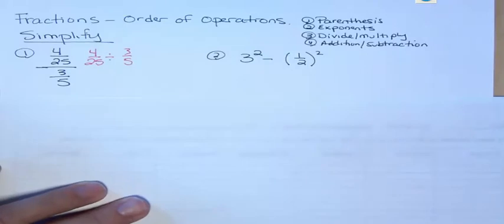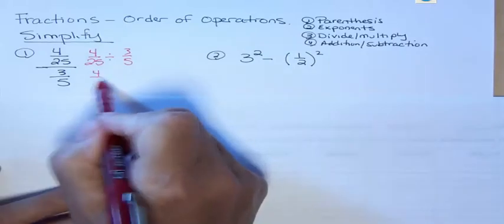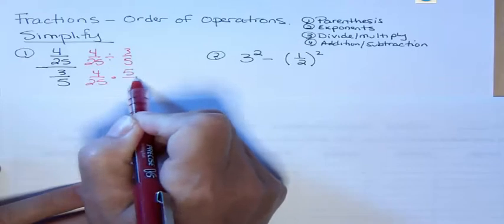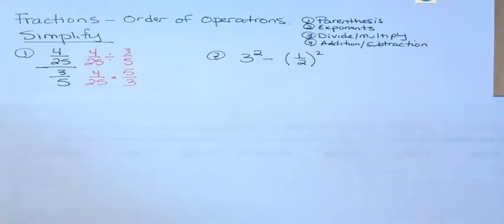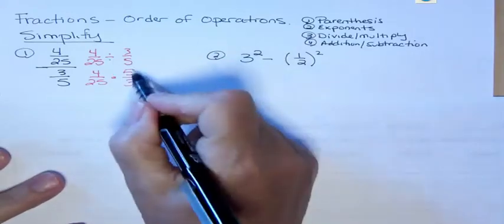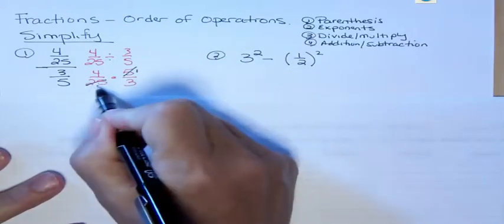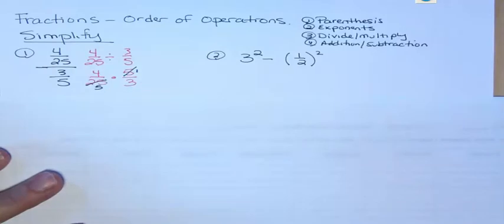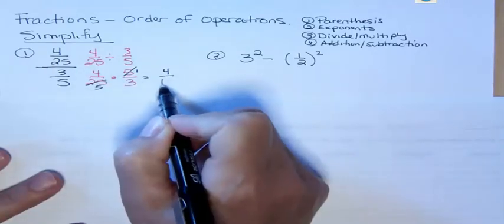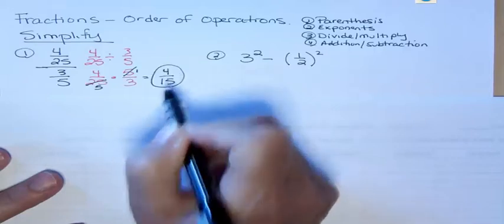So all we would do is keep 4/25 the same, change the division to multiply, and find the reciprocal of the next term, which the reciprocal just means we're going to flip it. And so then I would say 5 goes into itself one time, and it goes into 25 five times. And if I multiply straight across, I'm going to get 4 times 1 on the top and 5 times 3 in the denominator for 4/15.